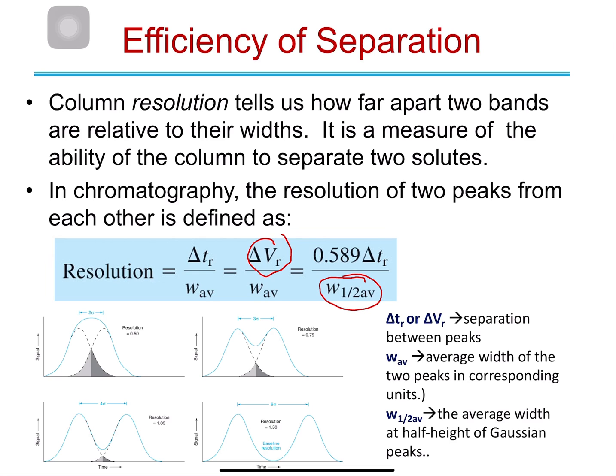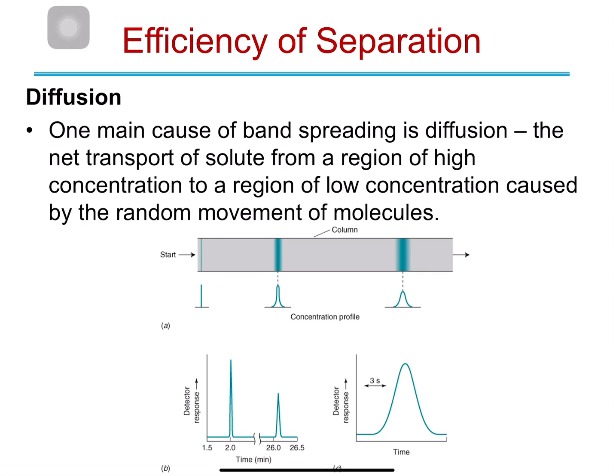The third method uses the width at half height: we take 0.589 times the difference in retention time divided by the average width at half height for both peaks. These are the three different methods to calculate the resolution of your peaks. Of course, the higher the resolution, the better the separation between the different components.